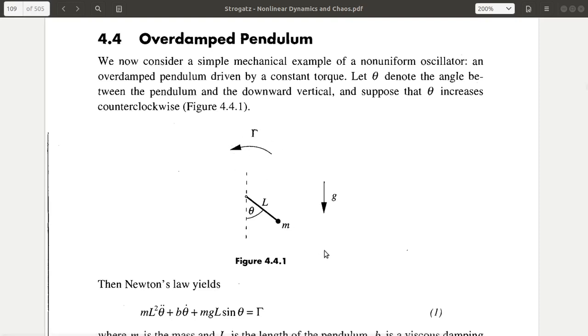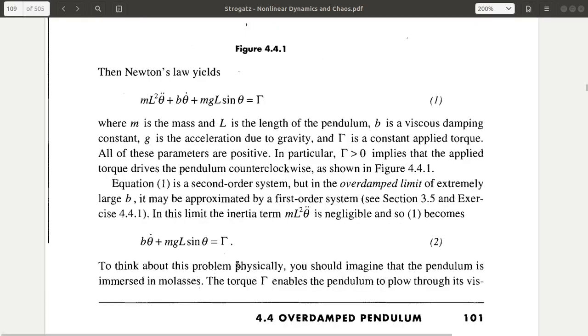Now, since it is an overdamped system, we can ignore the second order terms and if we ignore the second order terms, we will get this form. And in this form, what we are going to do is, we are going to take this term and put it that side and then divide this whole thing by B, this B.